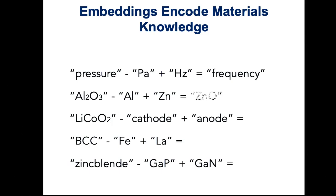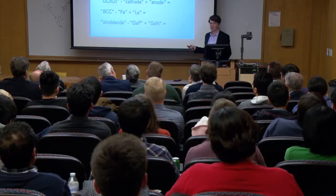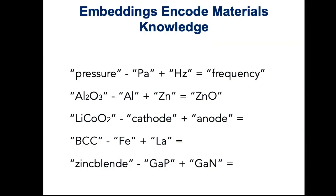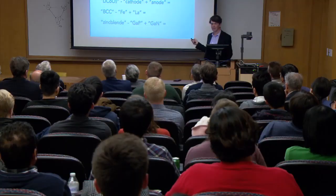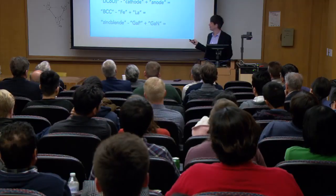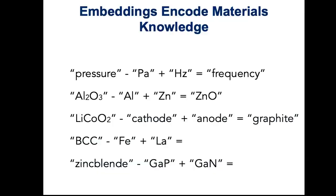Here's a more remarkable one: lithium cobalt oxide — did you pay attention to my first lecture? Minus cathode plus anode is graphite. So it learns that lithium cobalt oxide is a cathode. And BCC minus iron — that's the crystal structure of this thing — what is lanthanum? It's double HCP, and it actually gets picked up in the Word2Vec, which I was kind of surprised at. And zinc blende gallium phosphide means gallium nitride.